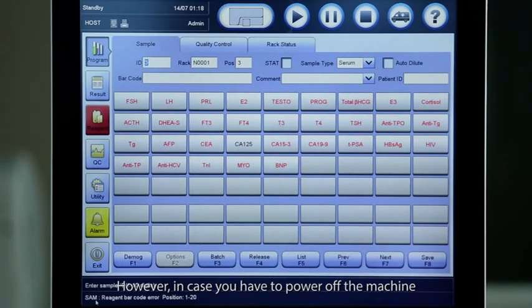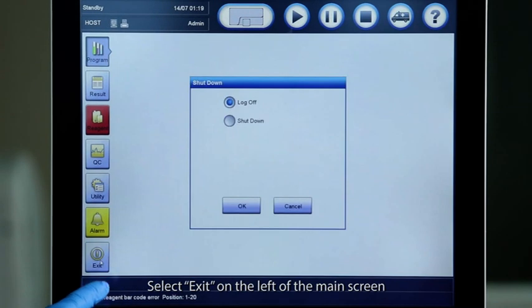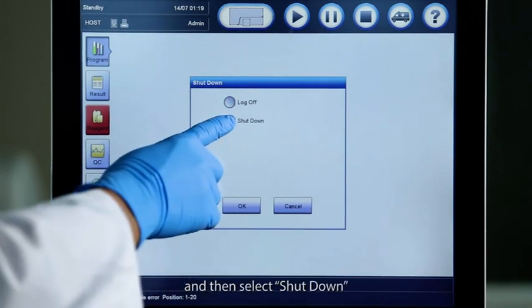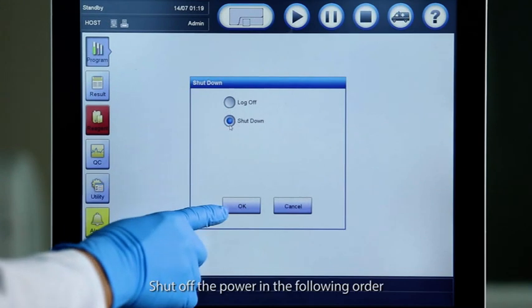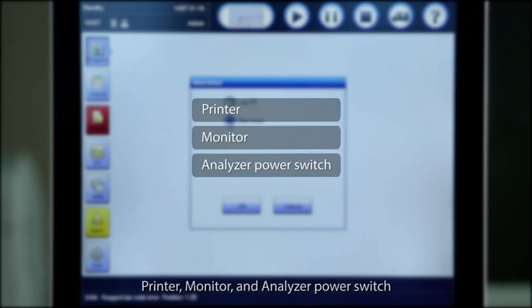However, in case you have to power off the machine, please make sure that the system is in standby status. Select exit on the left of the main screen and then select shut down. Shut off the power in the following order: Printer, monitor, and analyzer power switch.